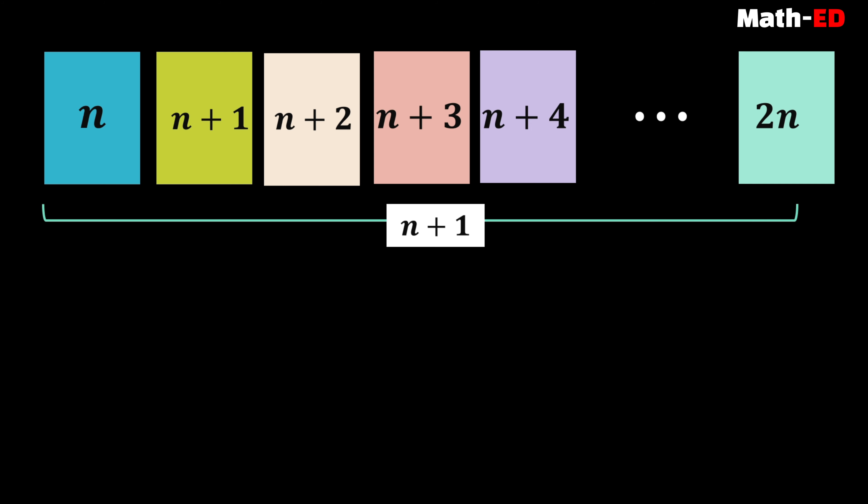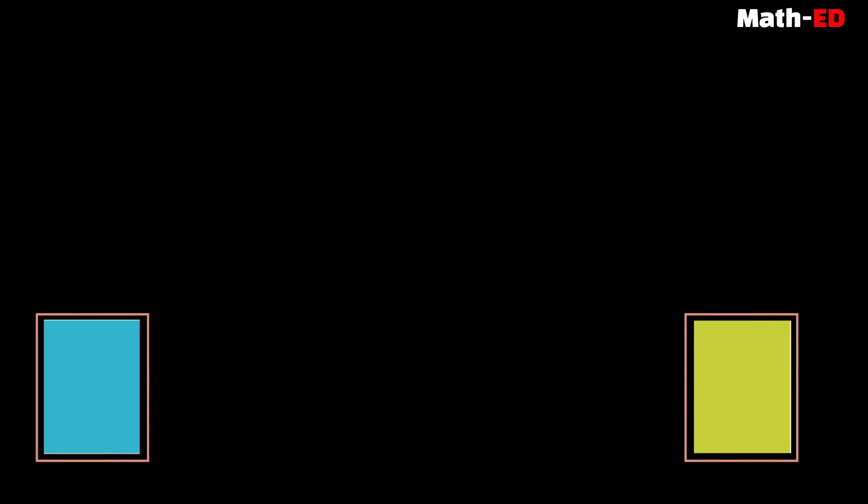Now we should divide the cards into two groups. And in this process, we should randomly mix the amount. Suppose the groups are group 1 and group 2.